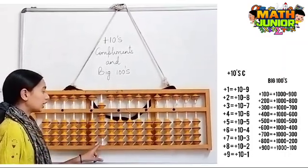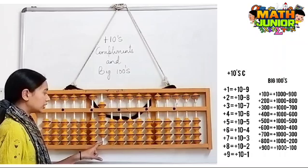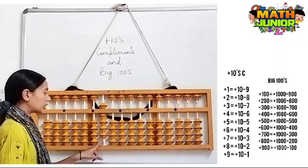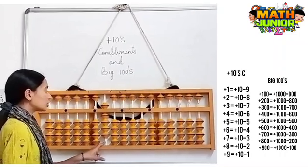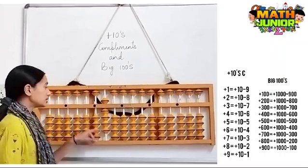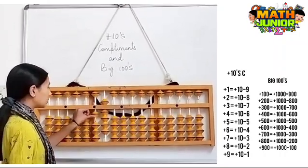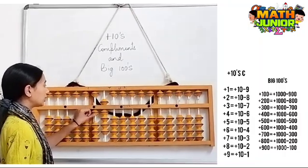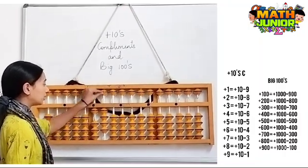Next, I have 900 here and I need to add 200. So the formula for plus 200 is plus 1000 minus 800.